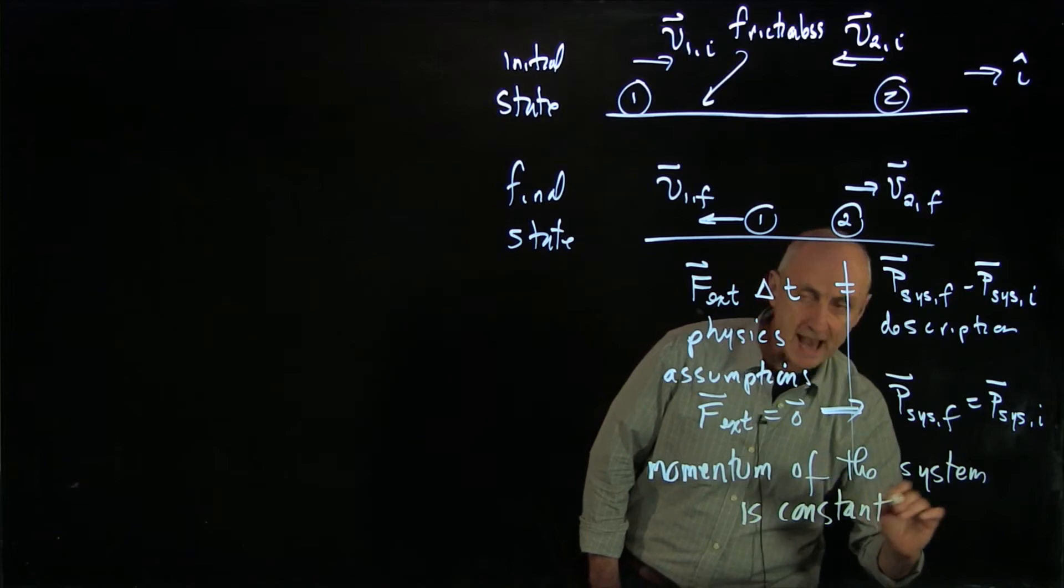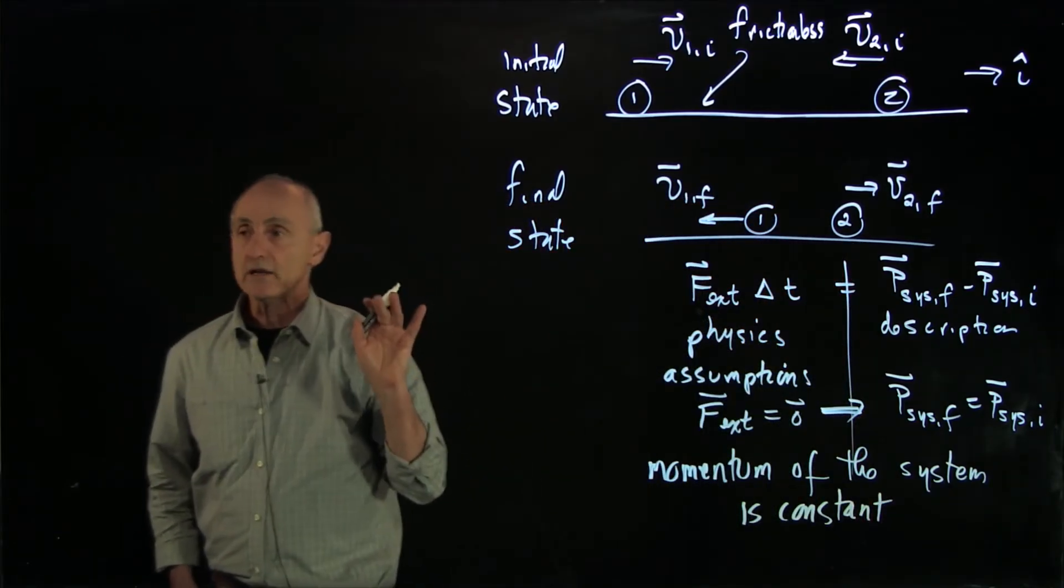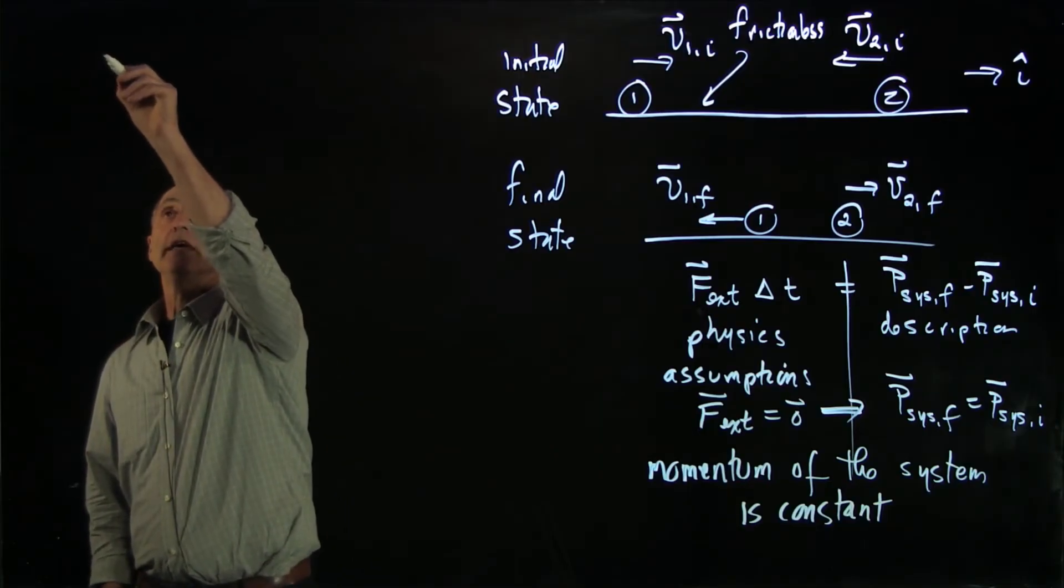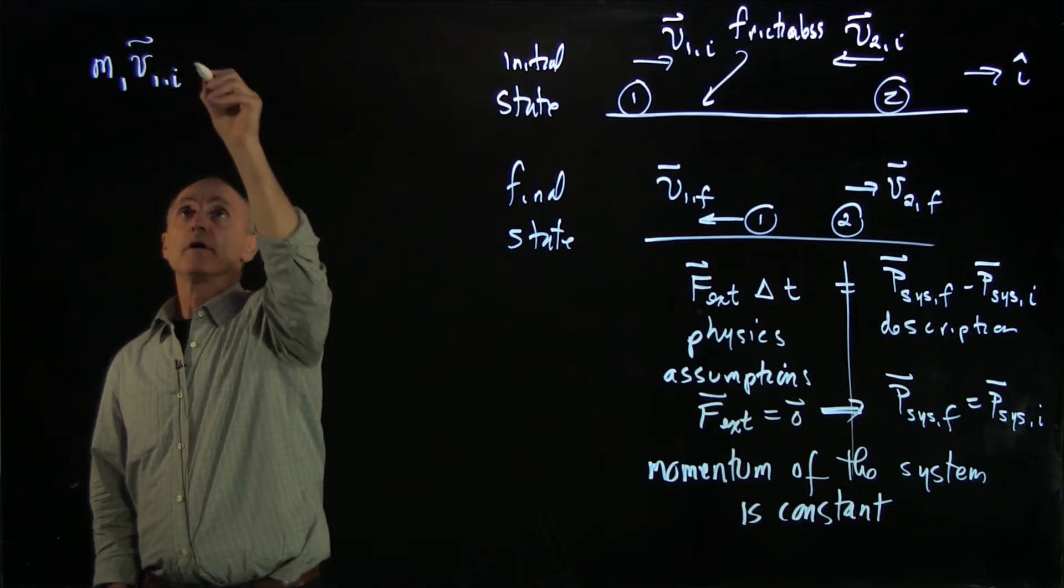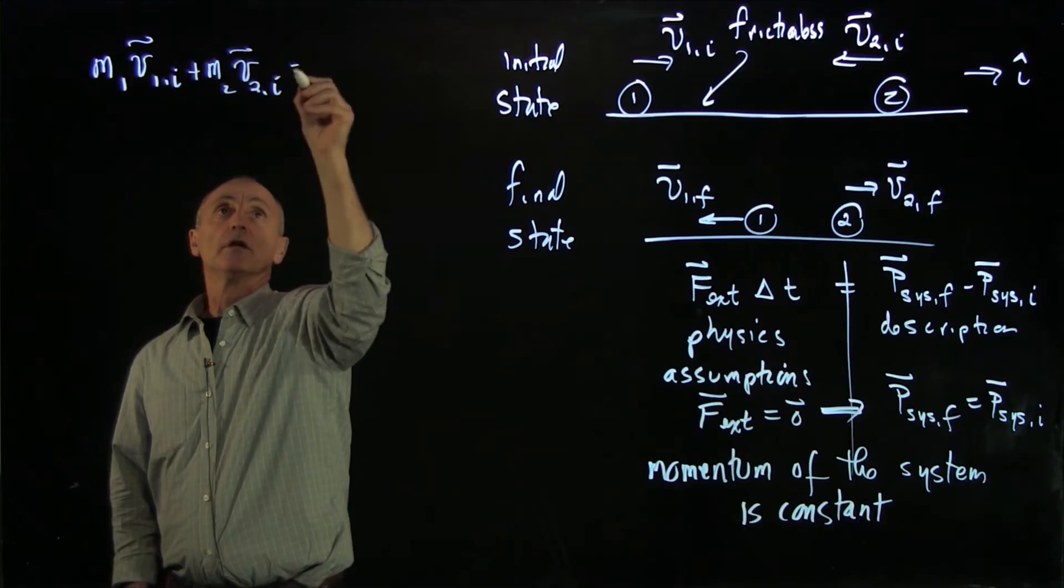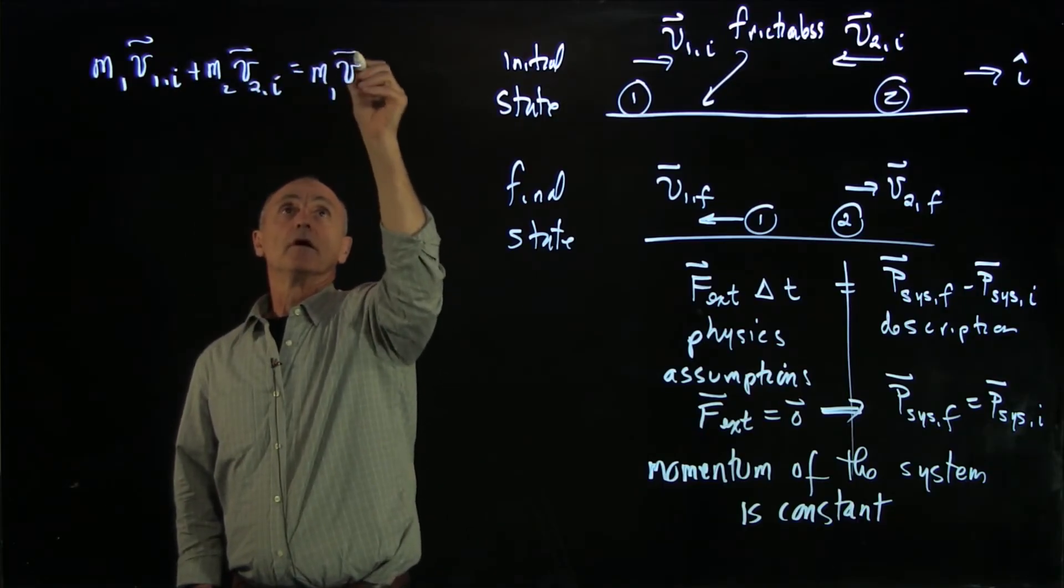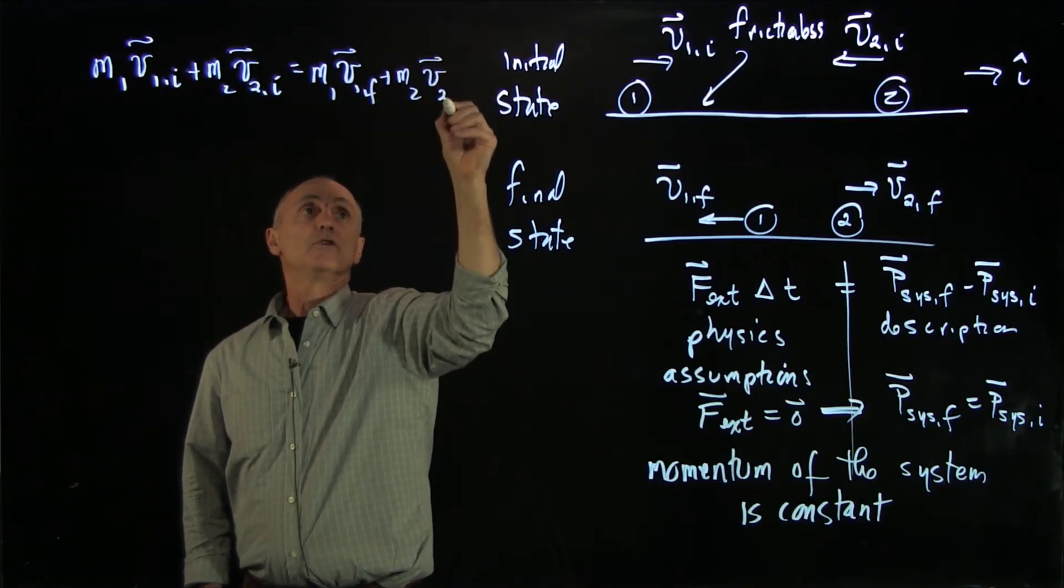Now how do we actually write that down? Well, let's now write it first as vector expressions. So we have the initial momentum, m1 v1 initial plus m2 v2 initial, is equal to the final momentum of the system, m1 v1 final plus m2 v2 final.